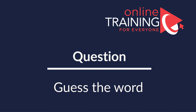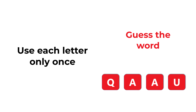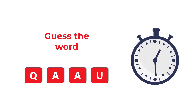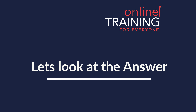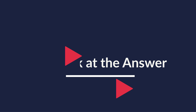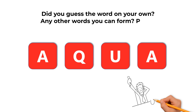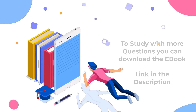A lot of times you might get a question that tests your knowledge of English words and how quickly you can extract them from memory. In this case, we are looking at four letters: Q, A, A, and U. You need to guess the word by combining these letters. Give yourself 5 to 10 seconds. The correct answer is the word 'aqua,' spelled A-Q-U-A, which you get by rearranging the letters on the screen.